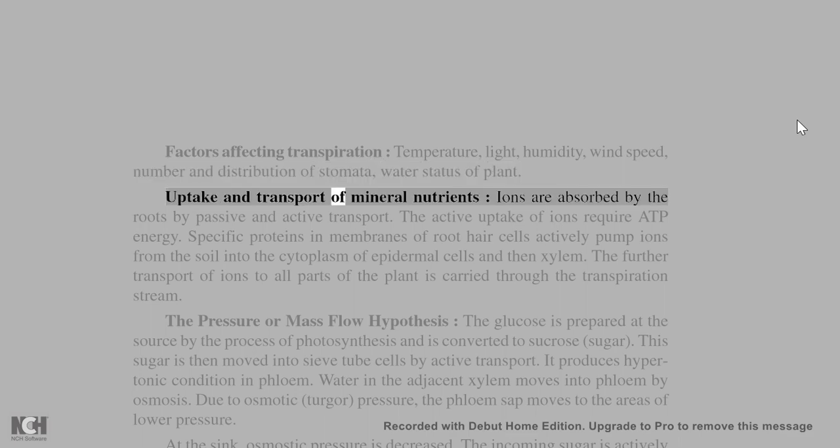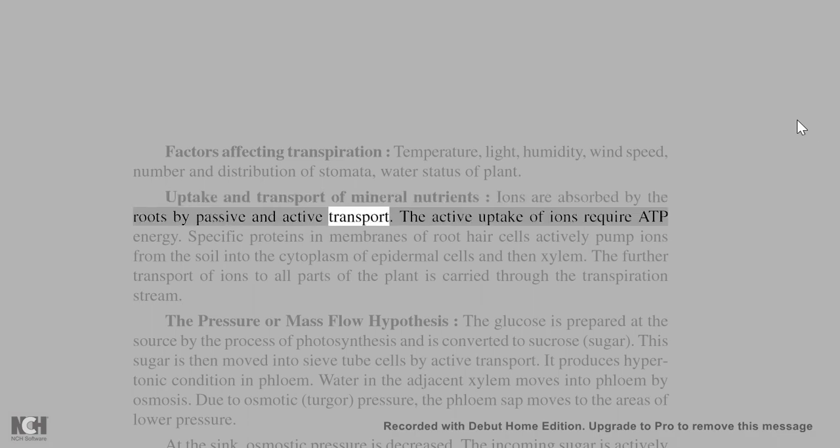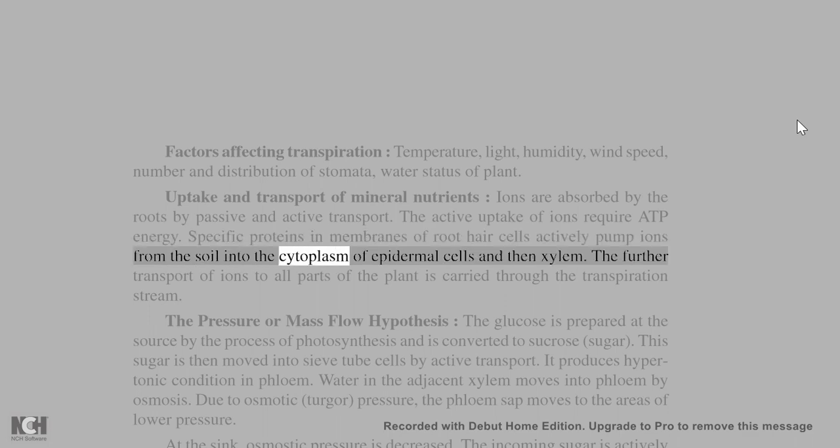Uptake and transport of mineral nutrients: ions are absorbed by the roots by passive and active transport. The active uptake of ions requires ATP energy. Specific proteins in membranes of root hair cells actively pump ions from the soil into the cytoplasm of epidermal cells and then xylem. The further transport of ions to all parts of the plant is carried through the transpiration stream.